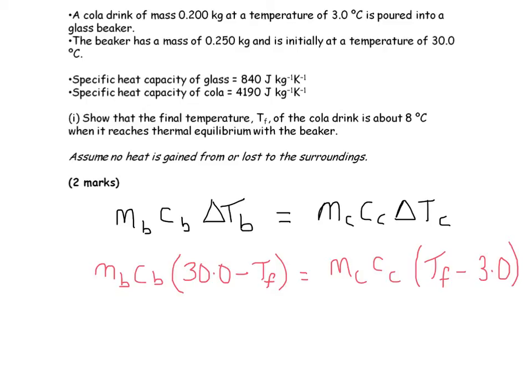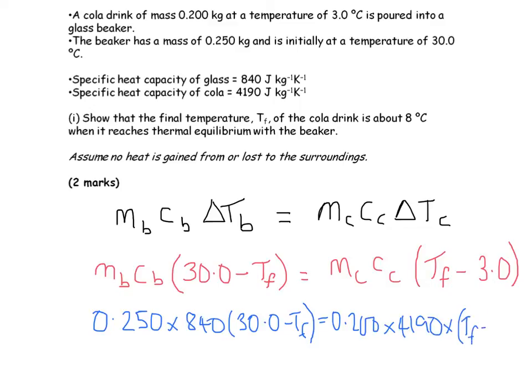So obviously in the question you are given these numbers, where you're given 0.250 times 840, 30.0 minus T_f, is equal to 0.200 times 4190 times T_f minus 3.0.